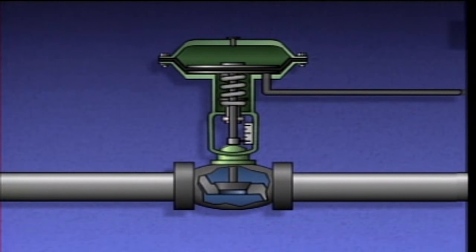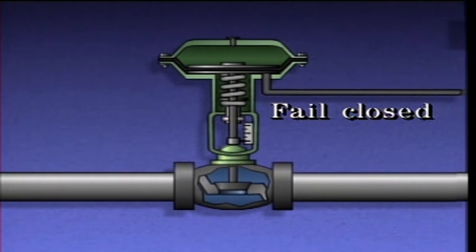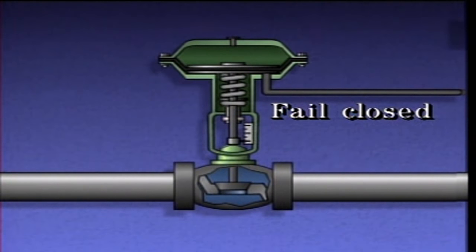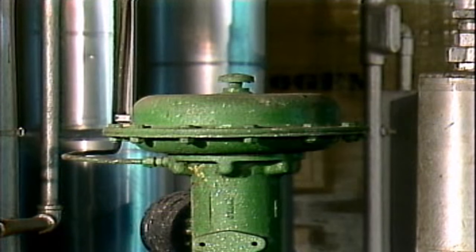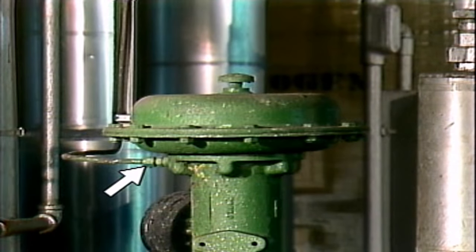A control valve using this kind of actuator is said to fail closed because if air pressure is lost, the spring in the actuator will close the valve. A diaphragm actuator with an air line to only the lower chamber is typically an air-to-open, spring-to-close type.